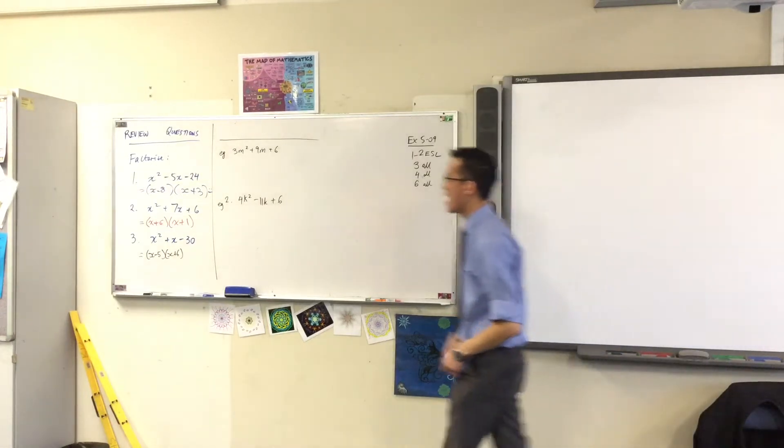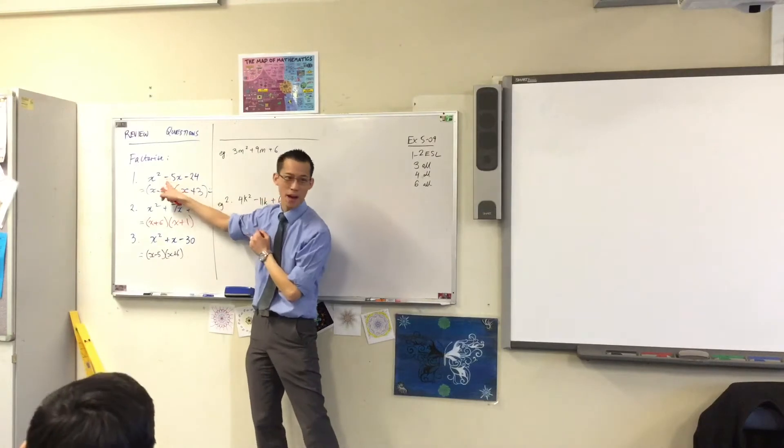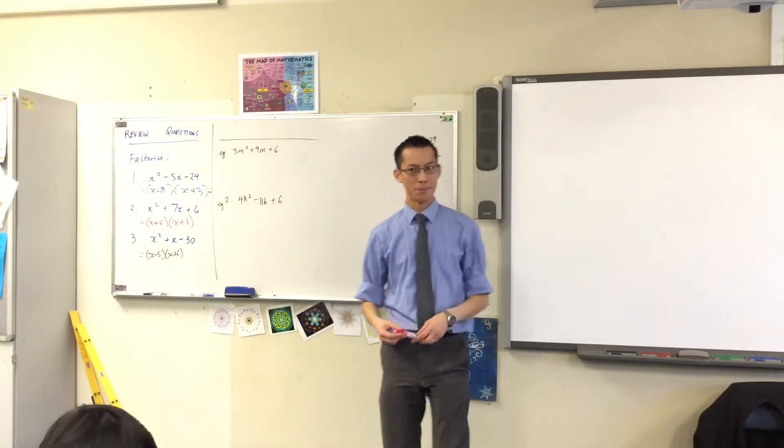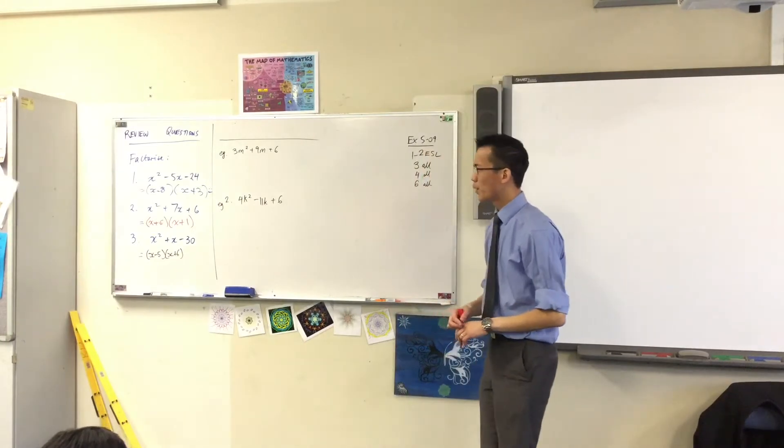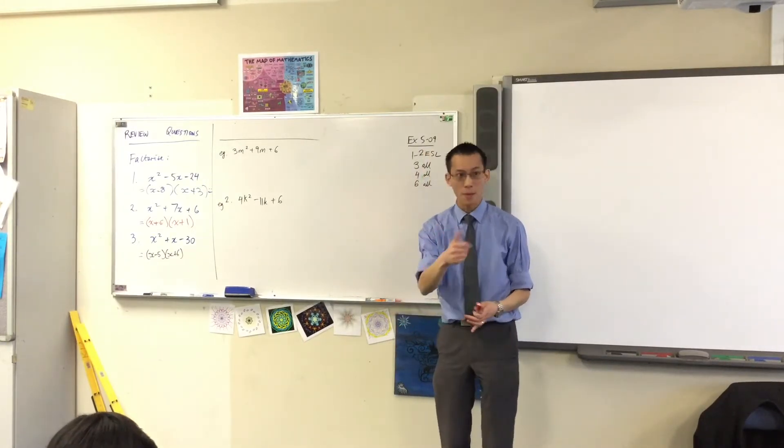Number one, the pair of numbers you're searching for should add to negative 5, they should multiply to negative 24. We've got negative 8 and 3, does it check out? Yeah. Thumbs up.